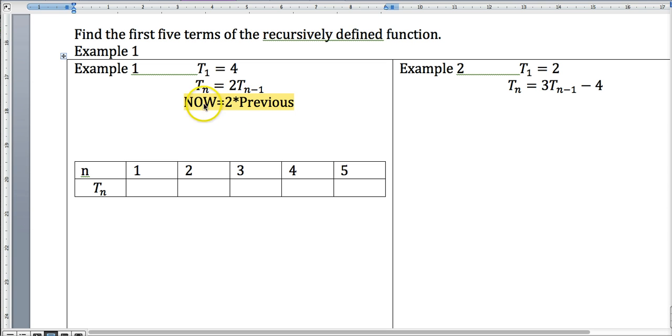And then this t sub n minus one is the previous term. And so all we're doing is taking to find what we want now is we take two times the previous term.